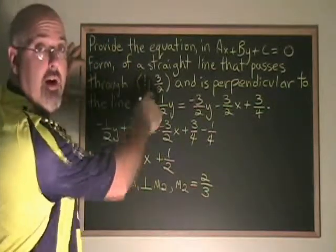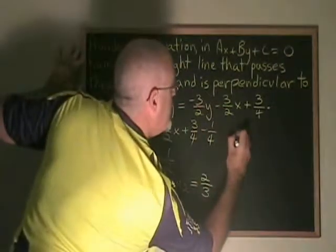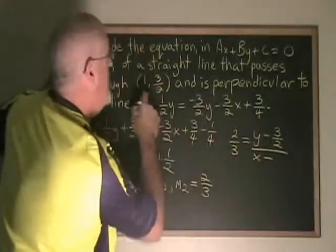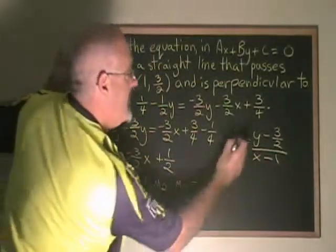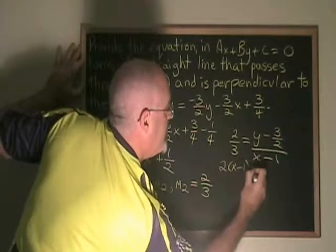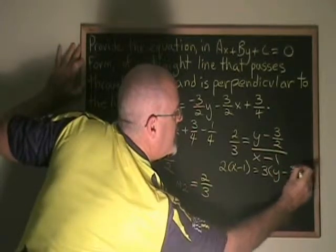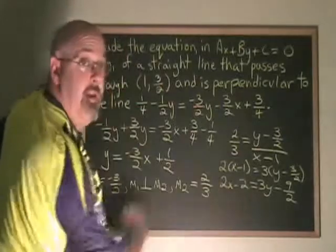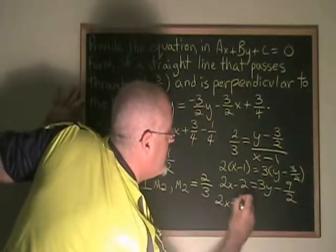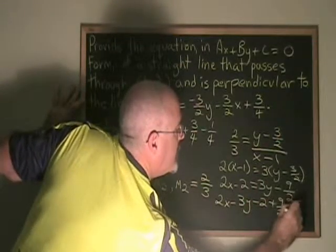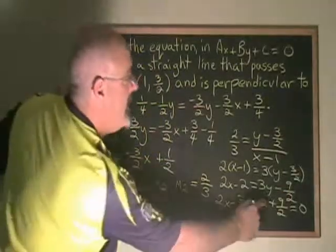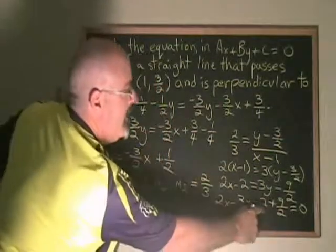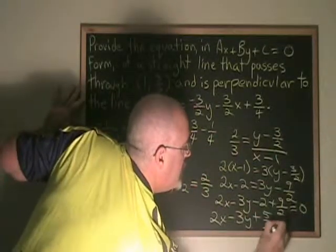Using this slope and the point (1, 3/2), I can derive the equation of the line. 2/3 equals y minus 3/2 over x minus 1. Cross multiplying, I have 2(x minus 1) equals 3(y minus 3/2), which gives 2x minus 2 equals 3y minus 9/2. Getting everything to the left of the equals, we have 2x minus 3y minus 2 plus 9/2 equals 0. Combining similar terms: 2x minus 3y minus 4/2 plus 9/2 gives 2x minus 3y plus 5/2 equals 0.